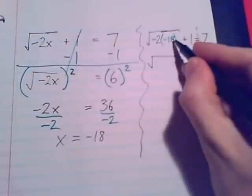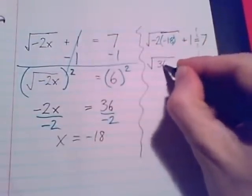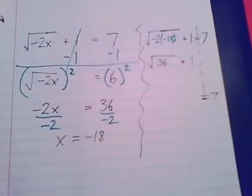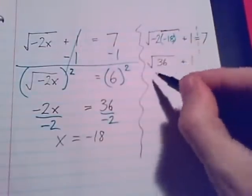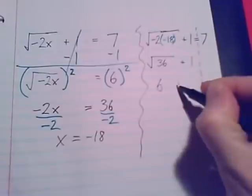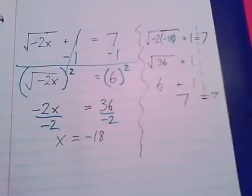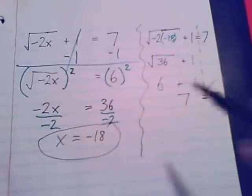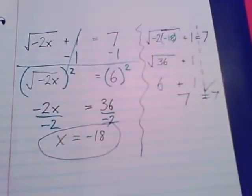Inside, negative 2 times negative 18 will be a positive 36, bringing down that plus 1. Now we can do this square root of 36, a 6. And the 6 plus 1 does equal 7. So there's a check. And x equals negative 18 is our solution.